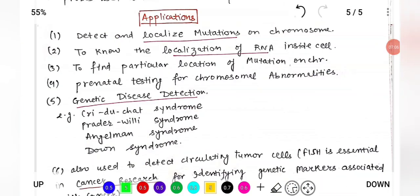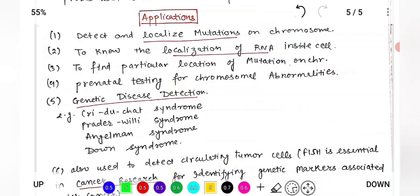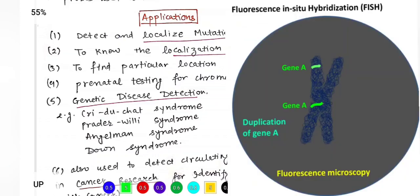Applications of FISH: First, we can detect mutations on chromosomes. Researchers can precisely locate a gene's position on a chromosome, find specific RNA/DNA sequences, and analyze chromosomal abnormalities like translocation, deletion, duplication, and inversion. For example, if gene duplication has occurred, fluorescence will appear at two locations.